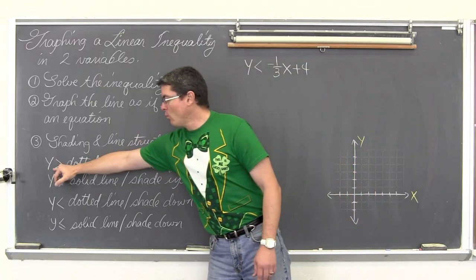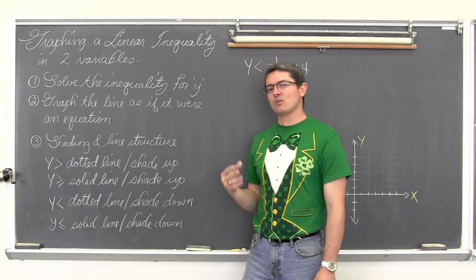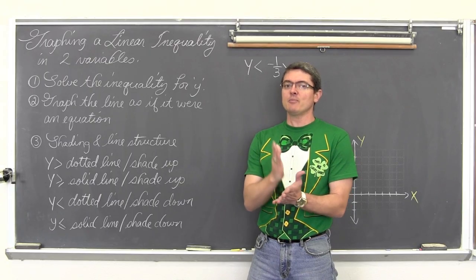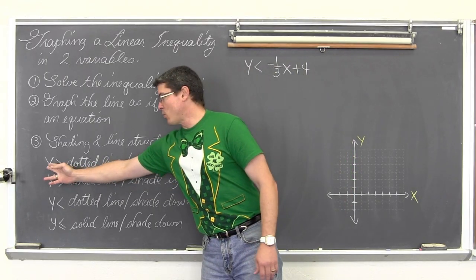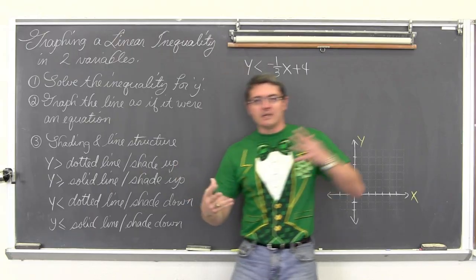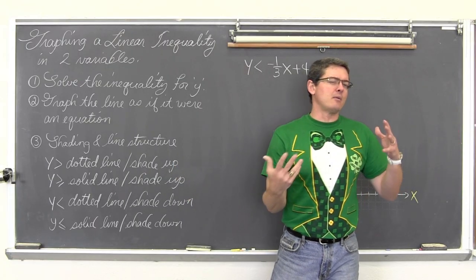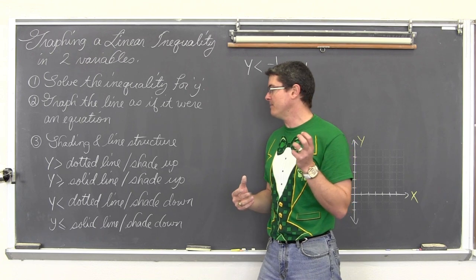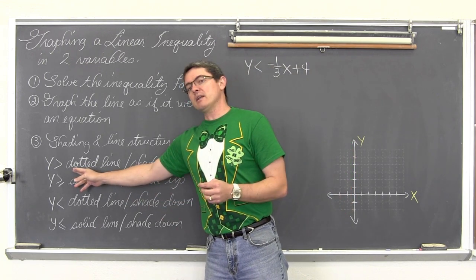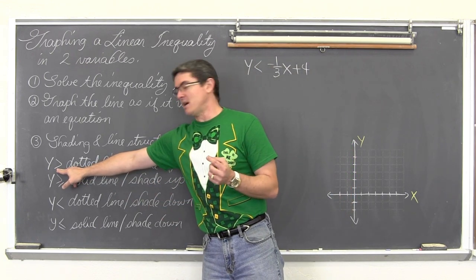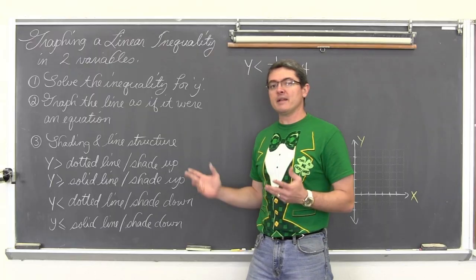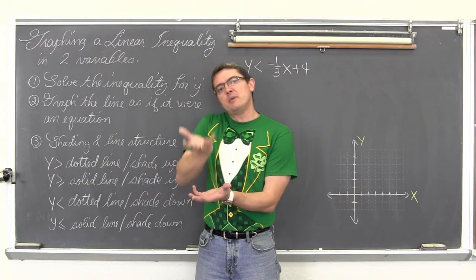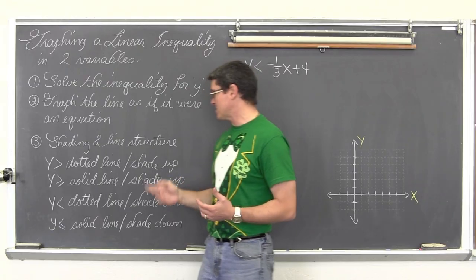Once you get the y variable completely alone — if it is y is greater than, and the right-hand side only has the variable x in it — then you are going to have a dotted line because there is no equal sign, and you are going to shade up. That is because it says y is greater than, and y values get bigger as you go up the y-axis. So you shade up.